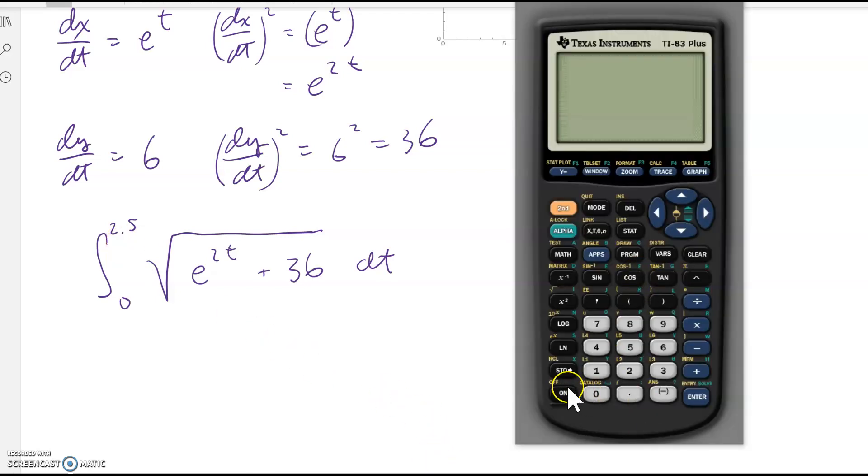For the graphing calculator, turn it on. You can use the fnint, go to the math menu, option number 9, fnint, and just type in the expression. Square root, e to the 2x power—for the calculator we have to use x—plus 36, closing parentheses to close off the square root part, then comma, variable x, then comma, and the boundaries 0 to 2.5, closing parentheses, and enter.